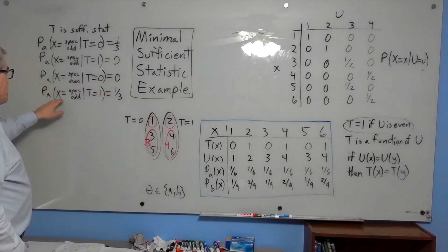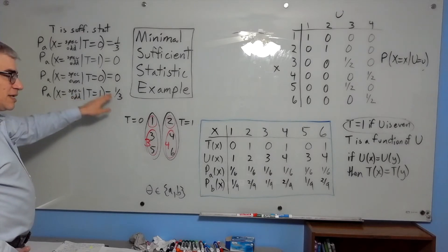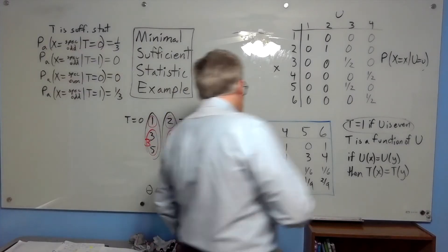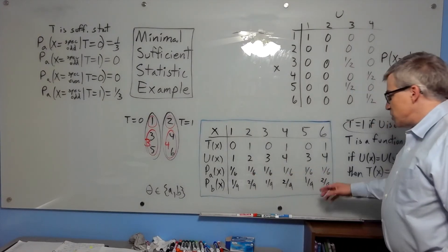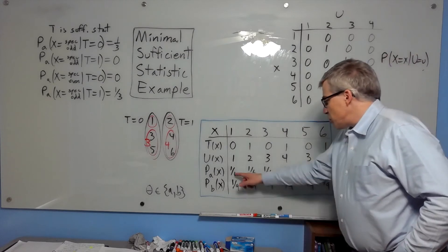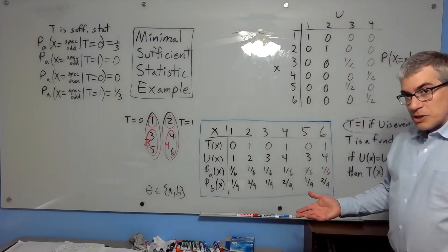Likewise, the probability that x is a specific even number given that t is 0 is 0. And finally, the probability that x is a specific even number given that t equals 1 is one-third. Because if you know you have an even number, they're all equally likely at one-sixth each. And if you have an odd number, they're all equally likely.